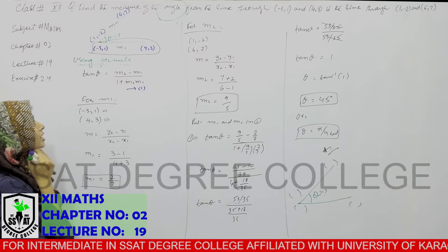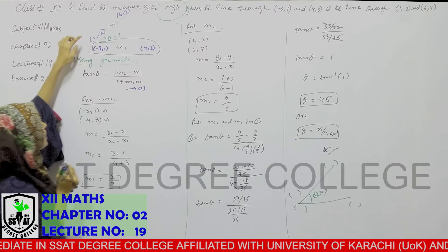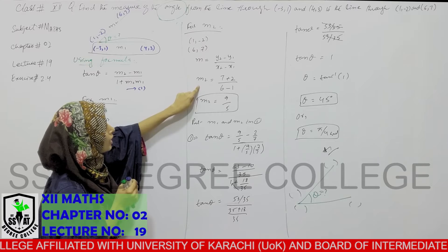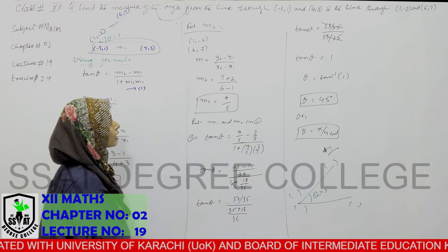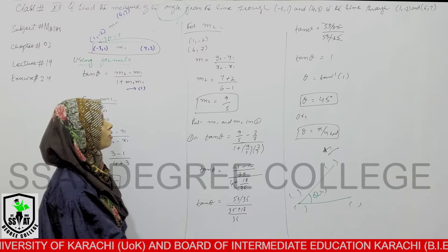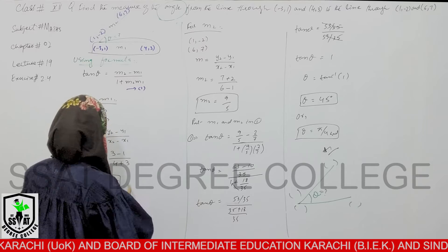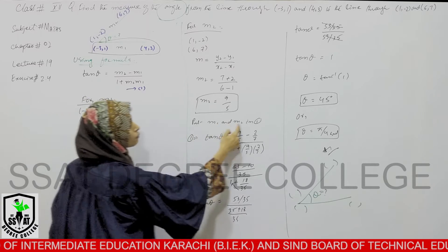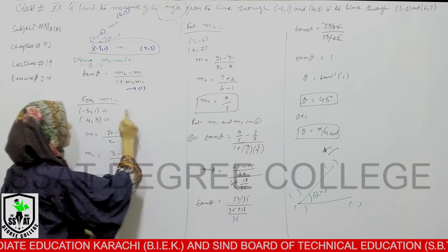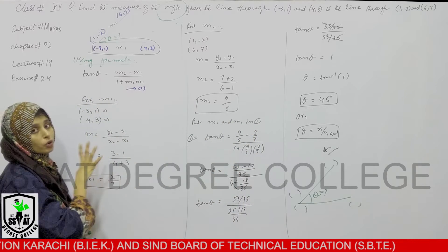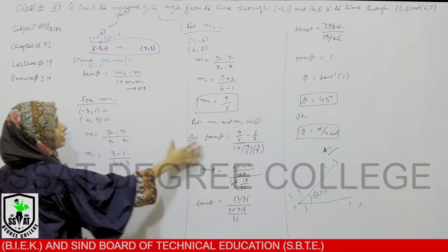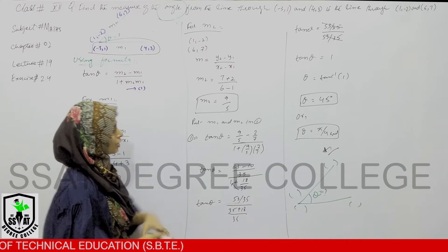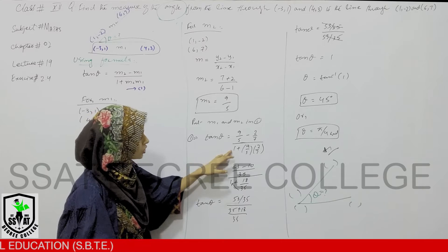Now I will do M2 using these two points. I have the formula for M2 and I will put it in to get the answer for M2. Then I will put M1 and M2 into equation 1 — that is where we have the M1 and M2 values. We did the simplification.